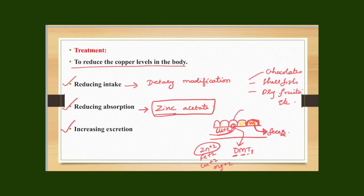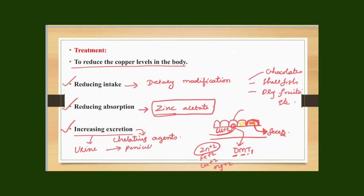The next method of eliminating copper from the body is using chelating agents. These chelating agents combine with free copper in the blood and allow it to be easily excreted into the urine. The two common chelating agents used today are penicillamine and trientine.